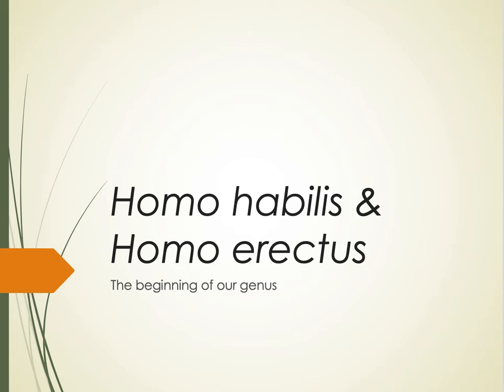Hello everybody, welcome back as we explore the earliest members of our genus. In our last lecture, we met some of our common ancestors, potentially Australopithecus afarensis, and other hominins that were surviving in Africa at the time that simply went extinct, like the Paranthropus genus. In this lecture, we're going to look at two species, Homo habilis and Homo erectus, so that you can complete your early Homo lab.